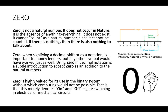Zero is not a natural number. It does not occur in nature anywhere. It's basically the absence of anything and everything, so it can't possibly exist. It cannot count as a natural number since it cannot be counted, and if there is nothing there, then there's nothing to talk about. From a natural science perspective, zero when signifying a decimal shift or annotation is certainly important to moneylenders and special interest groups, but any other symbol would work just as well — using zero in decimation introduces the idea of zero as an additional number, but it's not a natural occurrence.